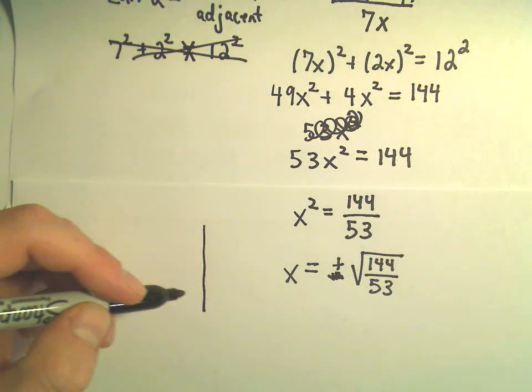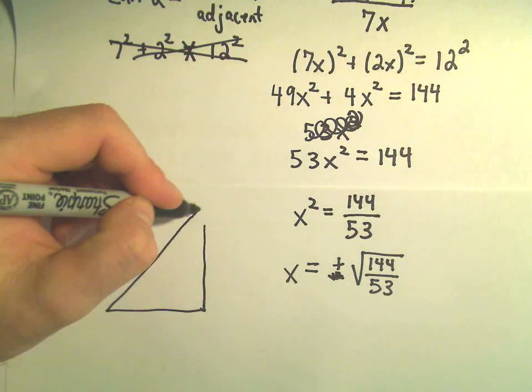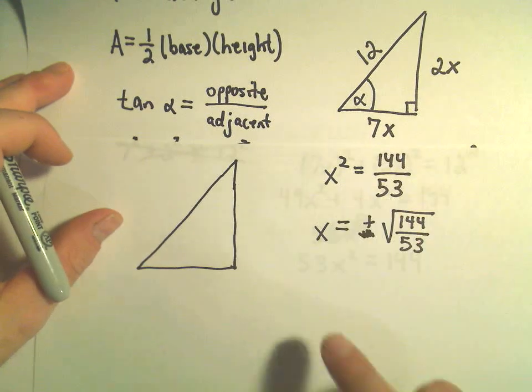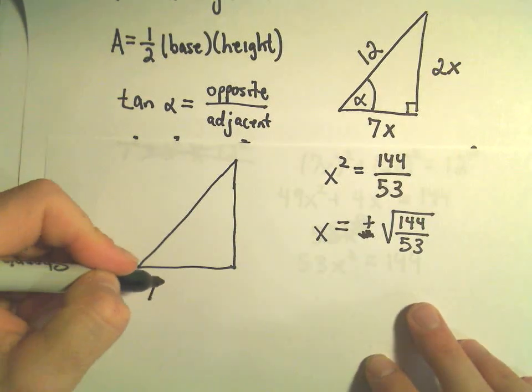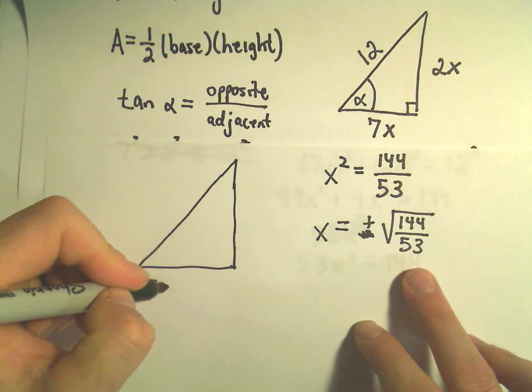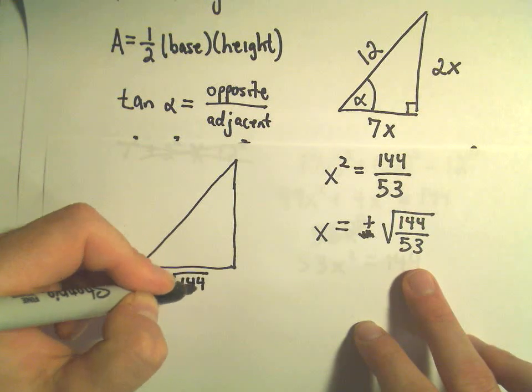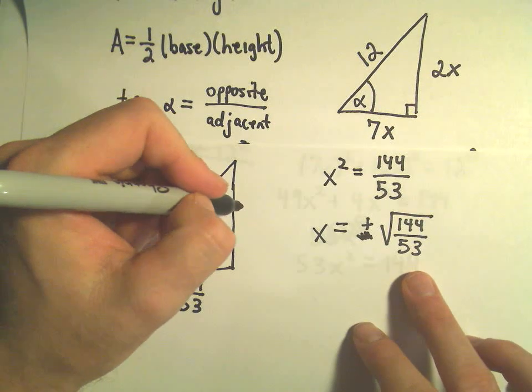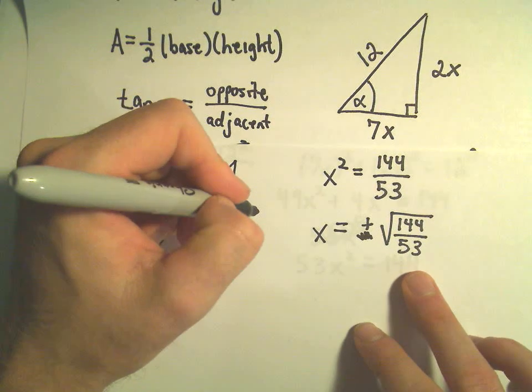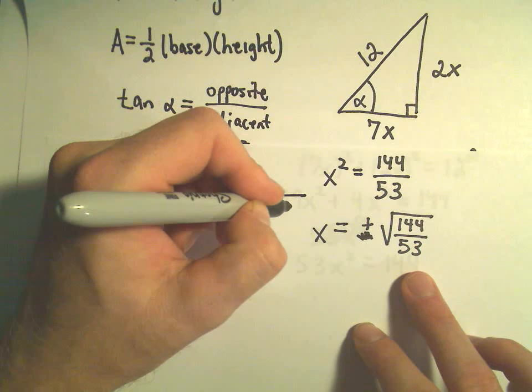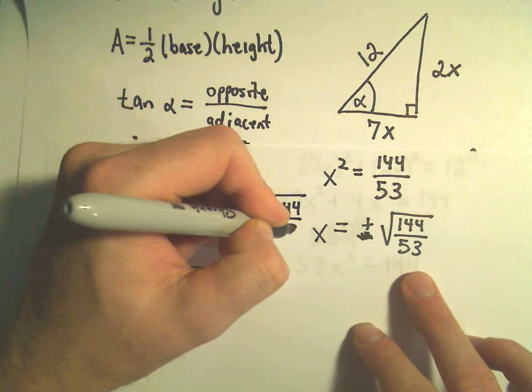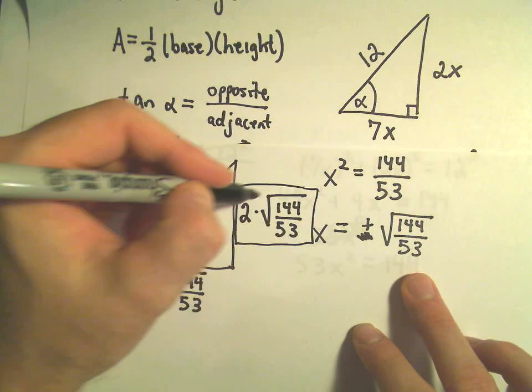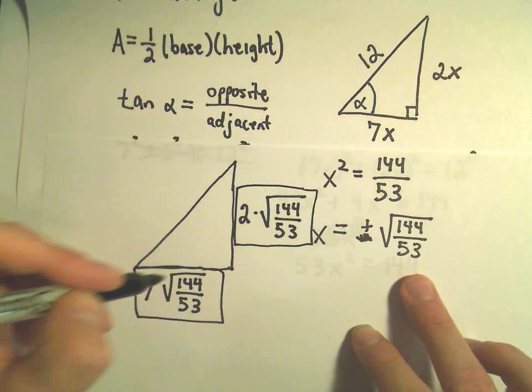We said that the base of our triangle was length 7x, so the base will have length 7 times the square root of 144 over 53. The height of the triangle, we said it's 2 times x, so we'll get 2 times the square root of 144 over 53. So, there's our height, so now I'm just going to go back and use our formula.